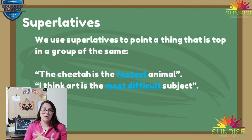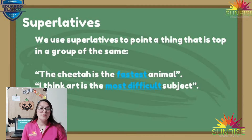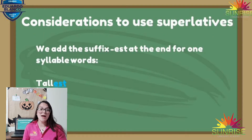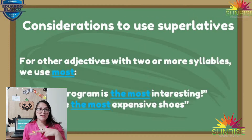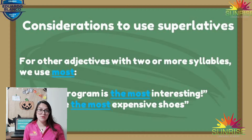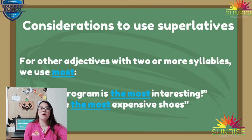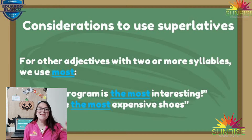There are a couple of rules to create superlatives depending on the number of syllables a word has. If the word has one syllable, we add the suffix -est at the end: tallest, biggest, fastest. If it has more than two syllables, then we add 'most' — for example, 'the program is the most interesting,' pointing out that one is the most interesting of all.